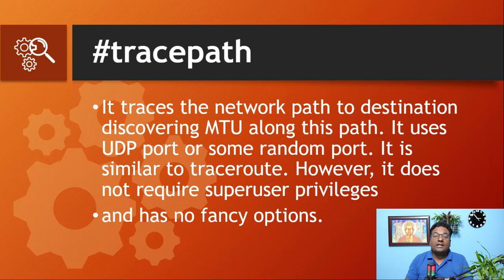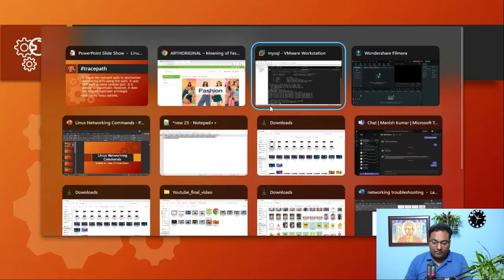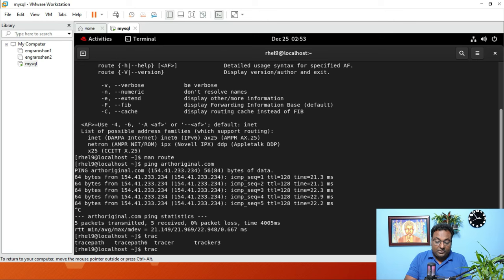The next command is tracepath. It traces the network path to the destination, discovering MTU along the path. It uses UDP or a random port. It is similar to traceroute, however it does not require super user privilege and has no fancy options. Note that in RHEL 9, traceroute is not available — only tracepath.